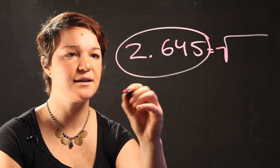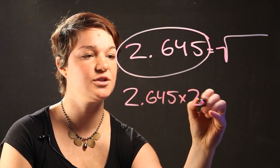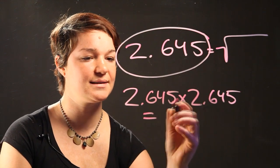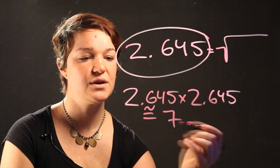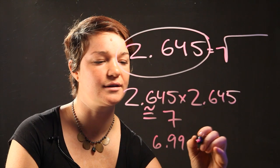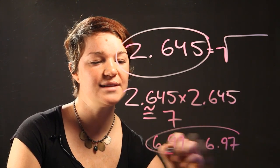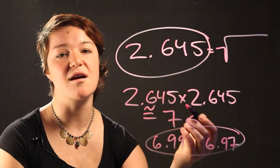So if we take 2.645 and multiply it by 2.645, what we get is a number that's close enough to 7. It can be something like 6.99 or 6.97. Both of these numbers are close enough to 7 that we can just approximate that they are 7.